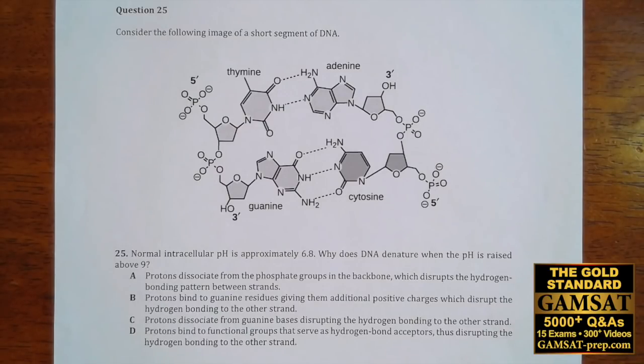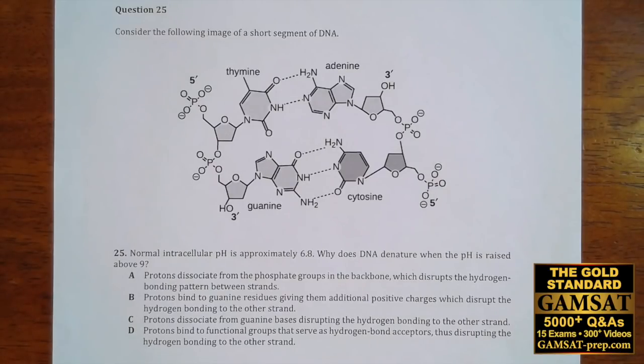So for question number 25, the answer is C. And from the book, you can read about hydrogen bonding and other intermolecular bonding in chemistry 4.2, organic chemistry 12.5 for phosphates and DNA, and biology 1.2.2.